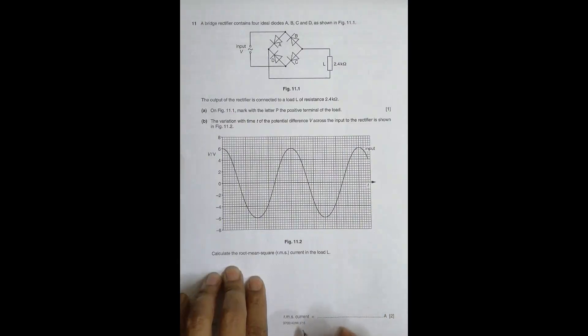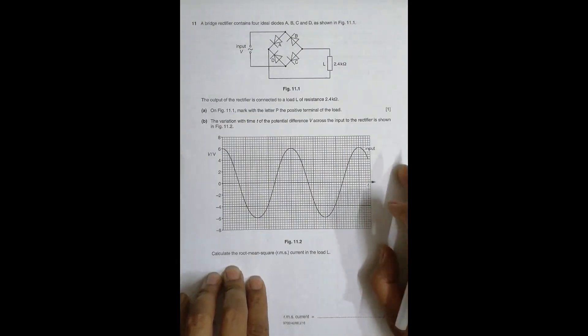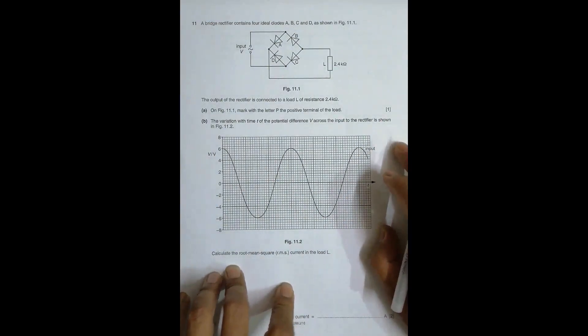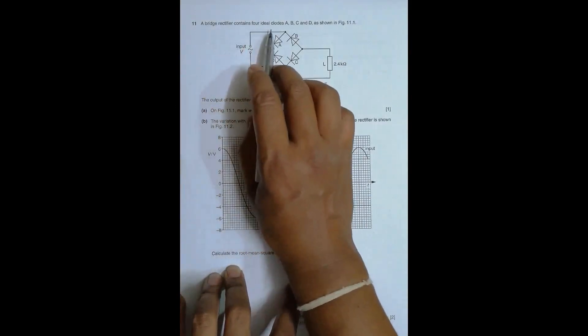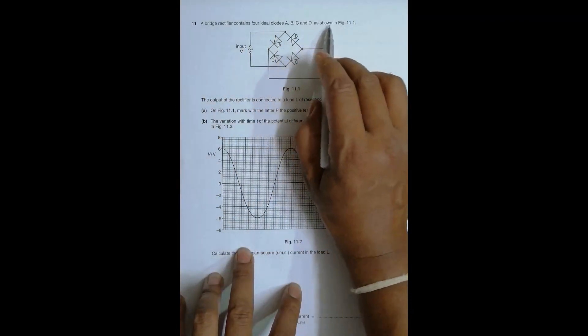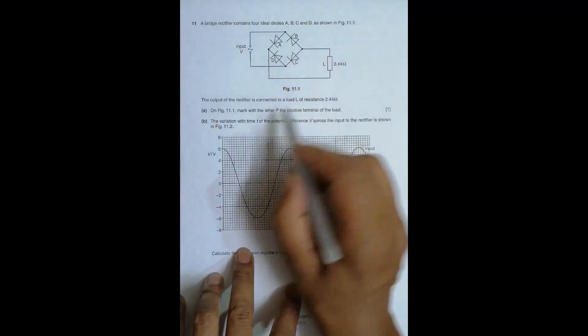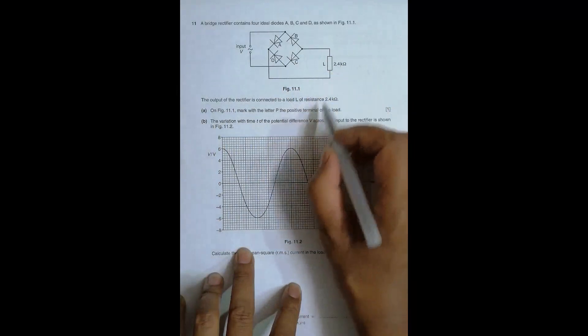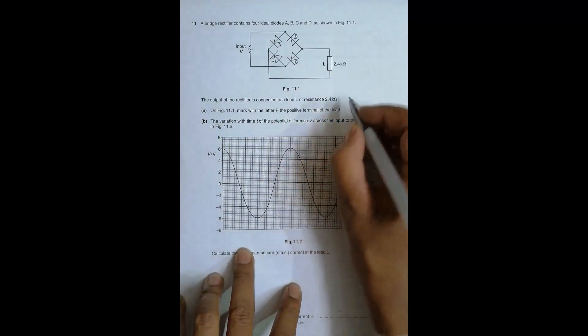Hello folks, this is the 2016 May/June paper, question number 11. It is concerned with the rectifier, so it belongs to the chapter of alternating current. A bridge rectifier contains four ideal diodes A, B, C and D as shown in figure 11.1. The output of the rectifier is connected to a load L of resistance 2.4 kilohms, which is equal to 2400 ohms.